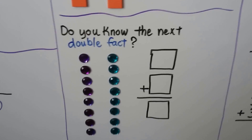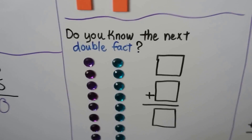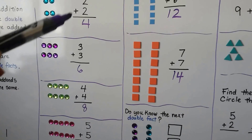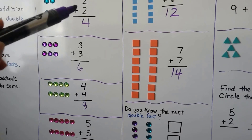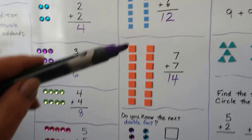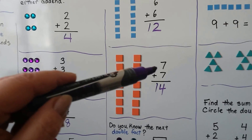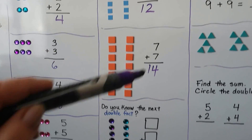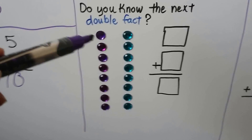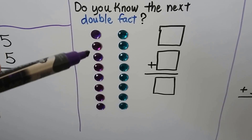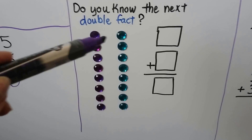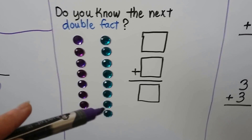Do you know the next double fact? If you look at what we've done so far, we did 2 plus 2, 3 plus 3, 4 plus 4, 5 plus 5, 6 plus 6, 7 plus 7. So you know what's going to go here. We're going to do 8 plus 8.